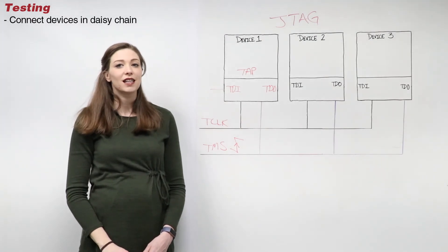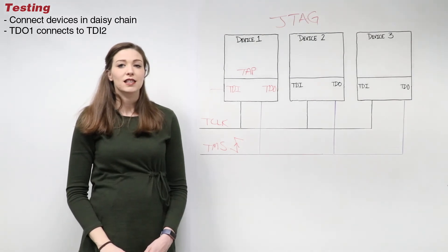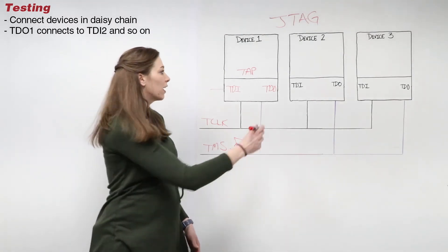To test the infrastructure in your assembly, connect the devices in a daisy chain, where the test data out signal from device one connects to the test data in of the next device, and so on.